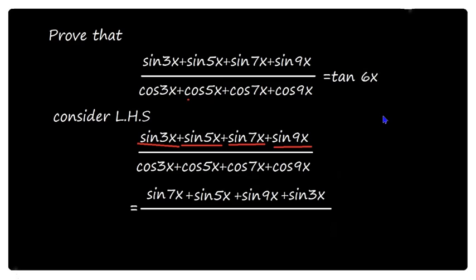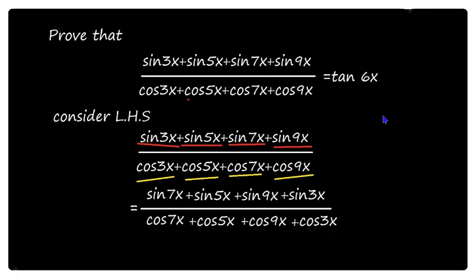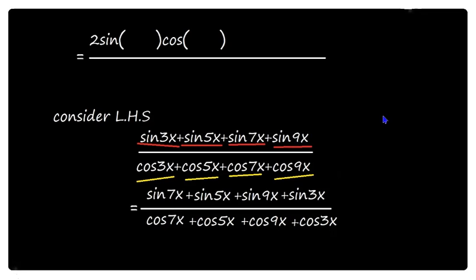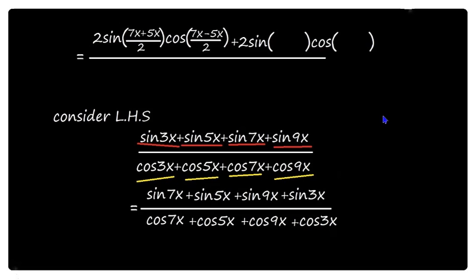Apply sin x plus sin y = 2 sin((x+y)/2) into cos((x-y)/2) to each pair in the numerator. For sin 7x plus sin 5x: 2 sin((7x+5x)/2) into cos((7x-5x)/2). For sin 9x plus sin 3x: 2 sin((9x+3x)/2) into cos((9x-3x)/2).